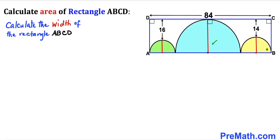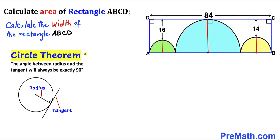Let's suppose these are the radii of all three semicircles. Now let's focus on the blue semicircle and recall the circle theorem: the angle between the radius and the tangent line will always be 90 degrees, as you can see in this diagram. Therefore, in our case this angle is 90 degrees, since CD is our tangent line and this is our radius.